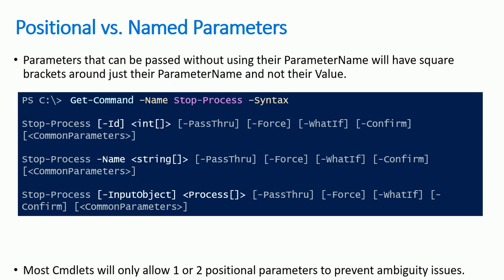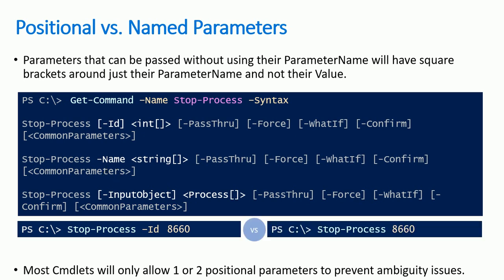Here is the positional and named parameter syntax. For Stop-Process, if you don't enter -Id explicitly, you can just pass the ID number directly by position. Even without the -Id parameter name, you can pass the value. Thank you, guys — I hope you learned something about PowerShell cmdlets. I'll be coming up with a new video soon. Thank you so much!